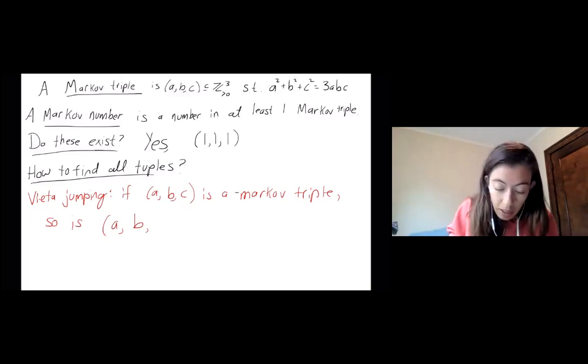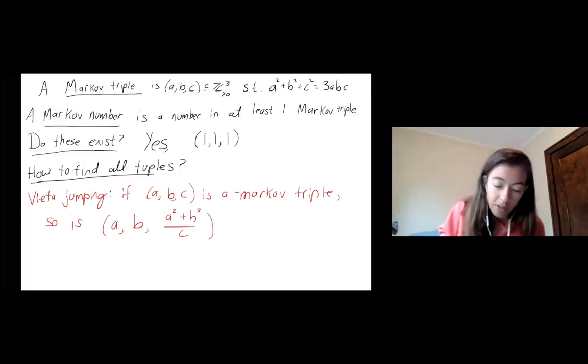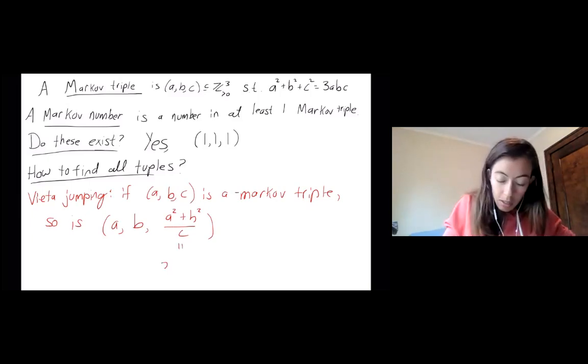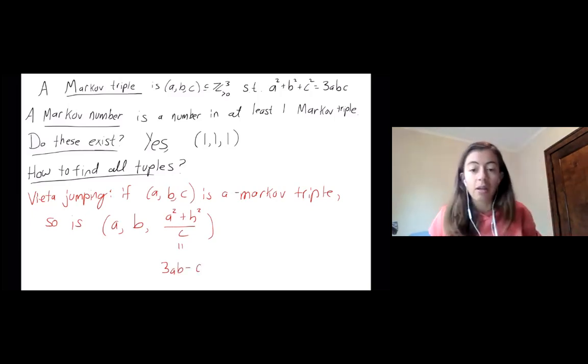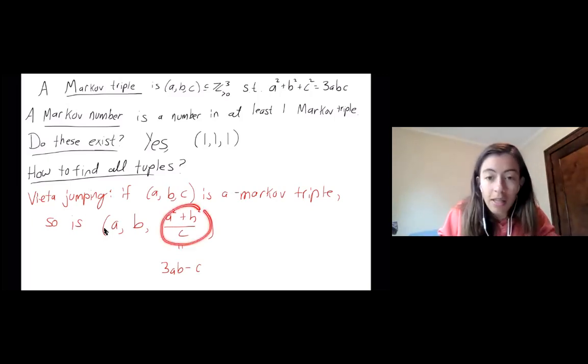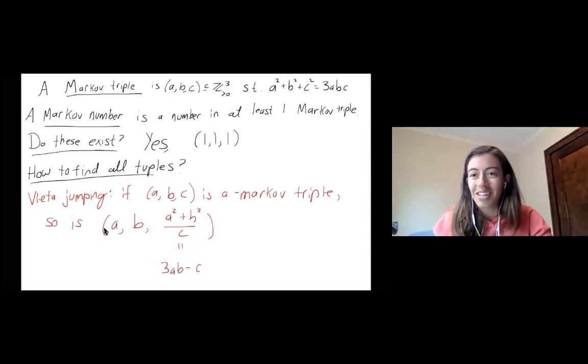So you can replace it with A squared plus B squared over C. And then you might complain that this doesn't look like it, this might not be an integer, right? I'm dividing by something that's worrying. But if you know that this is a Markov triple, you know that this is also, let's get it right. 3AB minus C, which was what Ryan had that formulation. But I really like this because you see here that it's positive and you see here that it's an integer. So I always find that very satisfying.